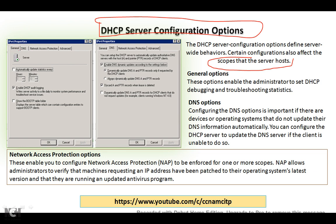First, there is a General option. This option enables the administrator to set up DHCP debugging, troubleshooting, and statistics. If we click on it — I don't have a DHCP server right now, so I will explain it theoretically. Here we have two options: Enable DHCP audit logging, and another thing is BOOTTP. The other option is the DNS option — so what is the DNS option?